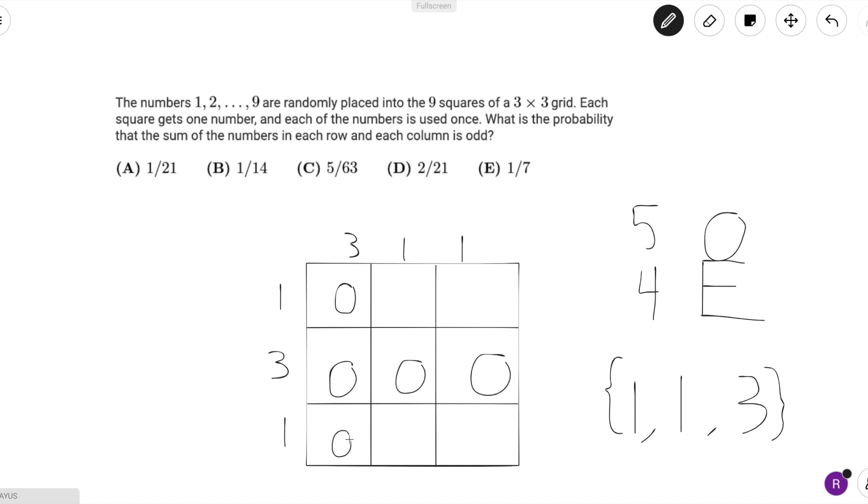And we can see that this grid already satisfies our conditions. Each column has an odd number of odd numbers, and each row has an odd number of odd numbers. And if we look at only this square right here, the one that's circled,